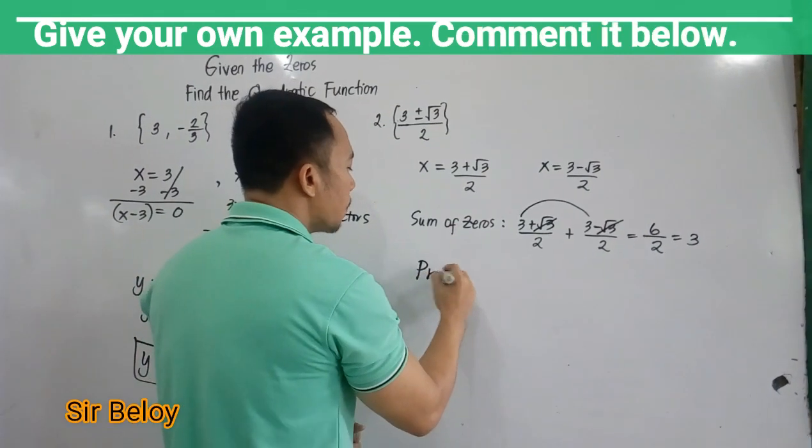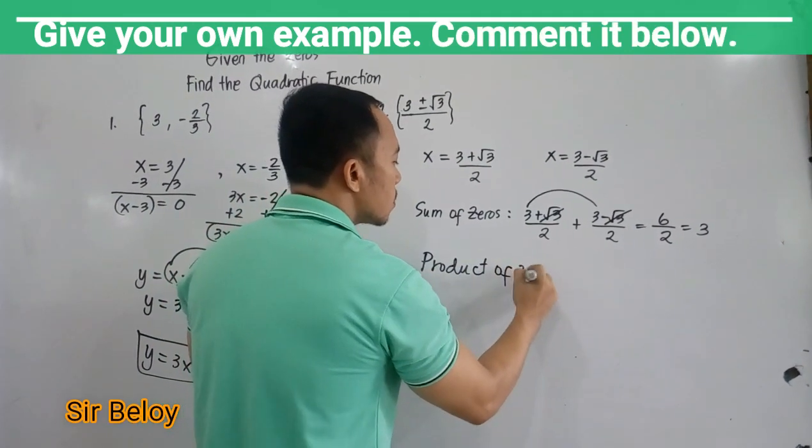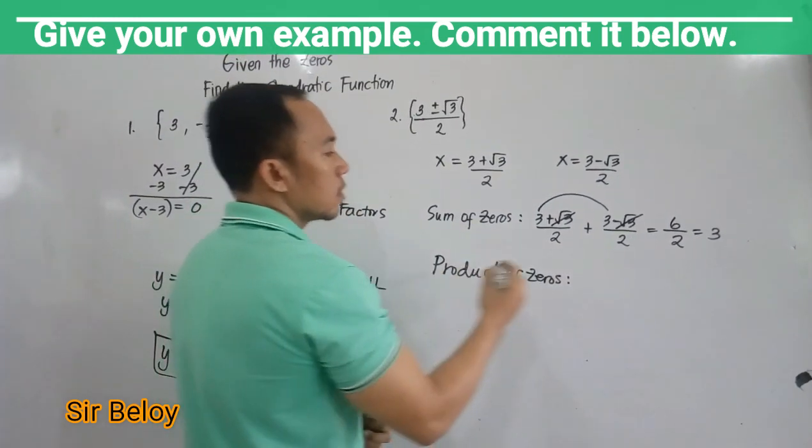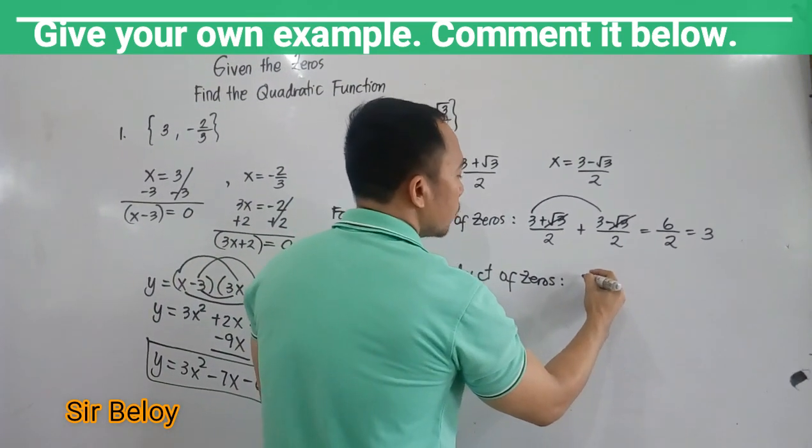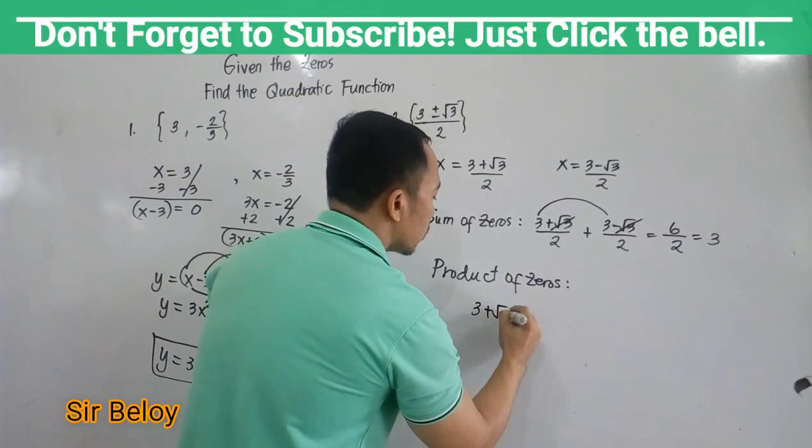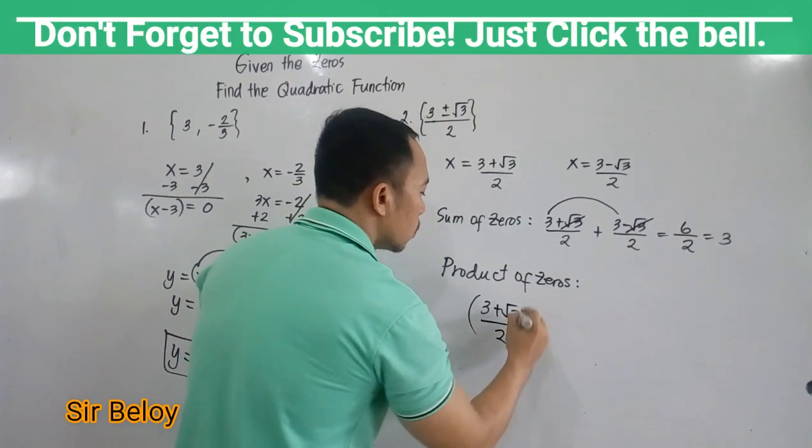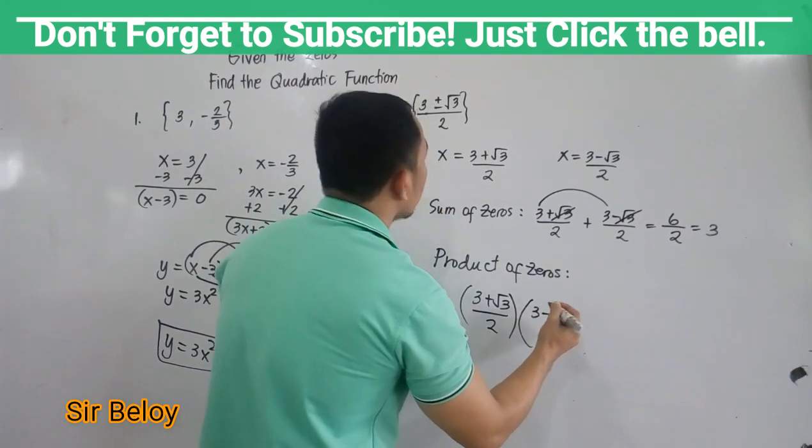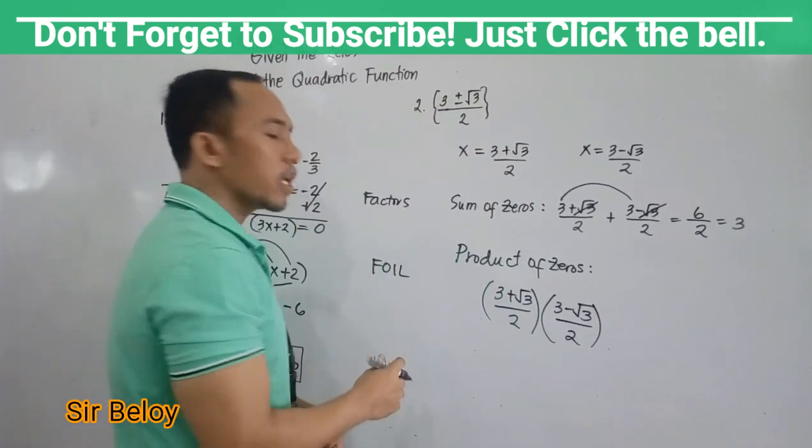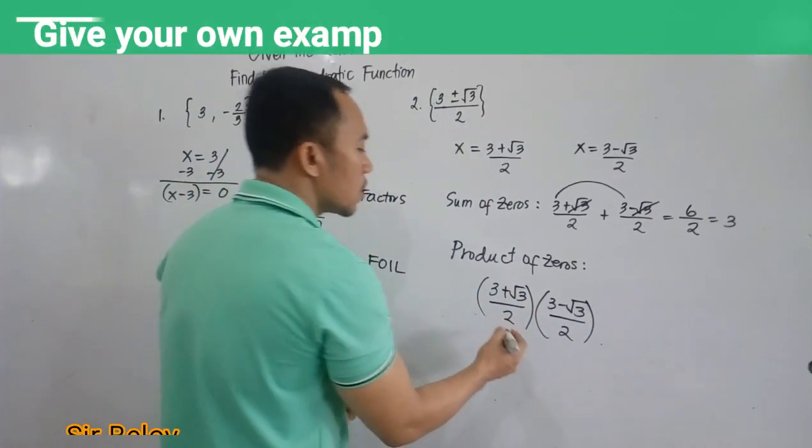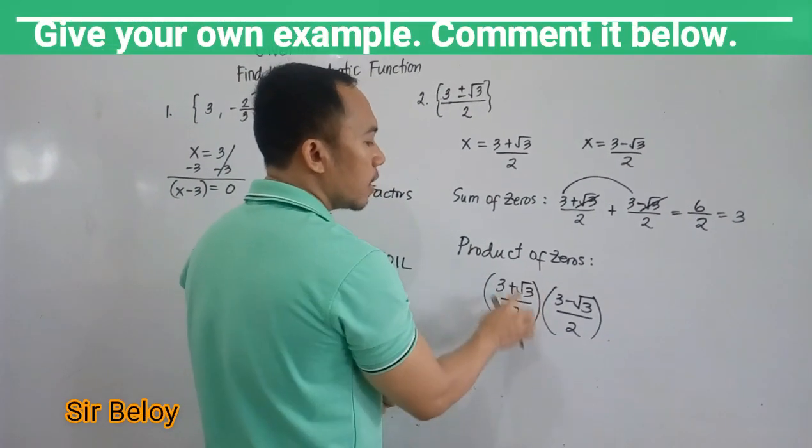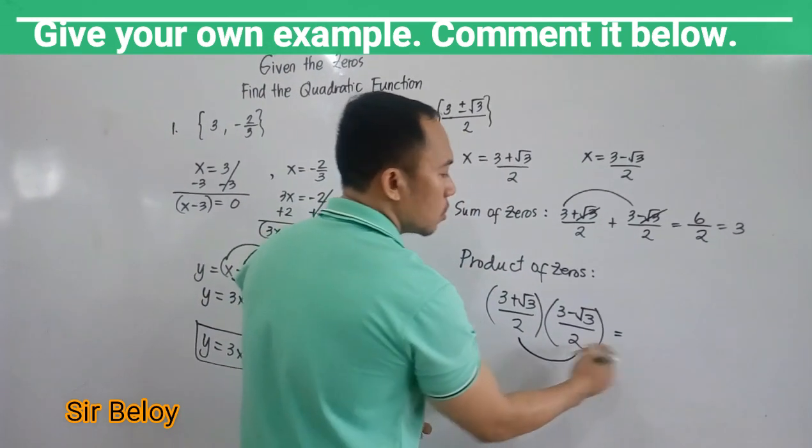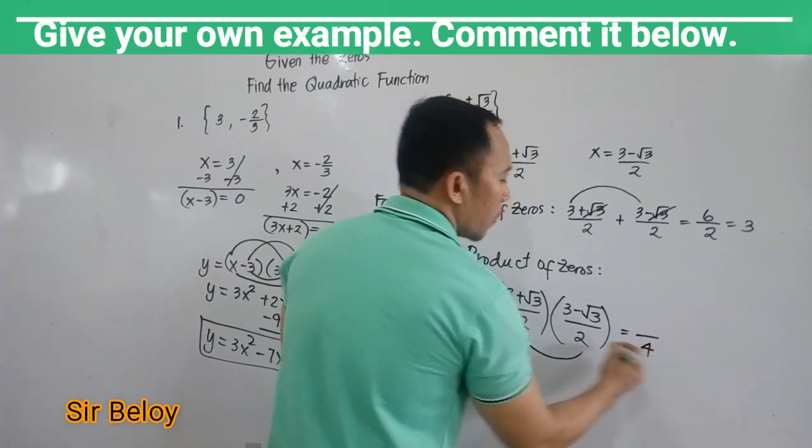Then get the product of zeros. This will become (3 plus square root of 3 over 2) times (3 minus square root of 3 over 2). So in multiplying fractions, we will multiply the numerators and the denominators. So for denominators, we have 2 times 2, it is 4.